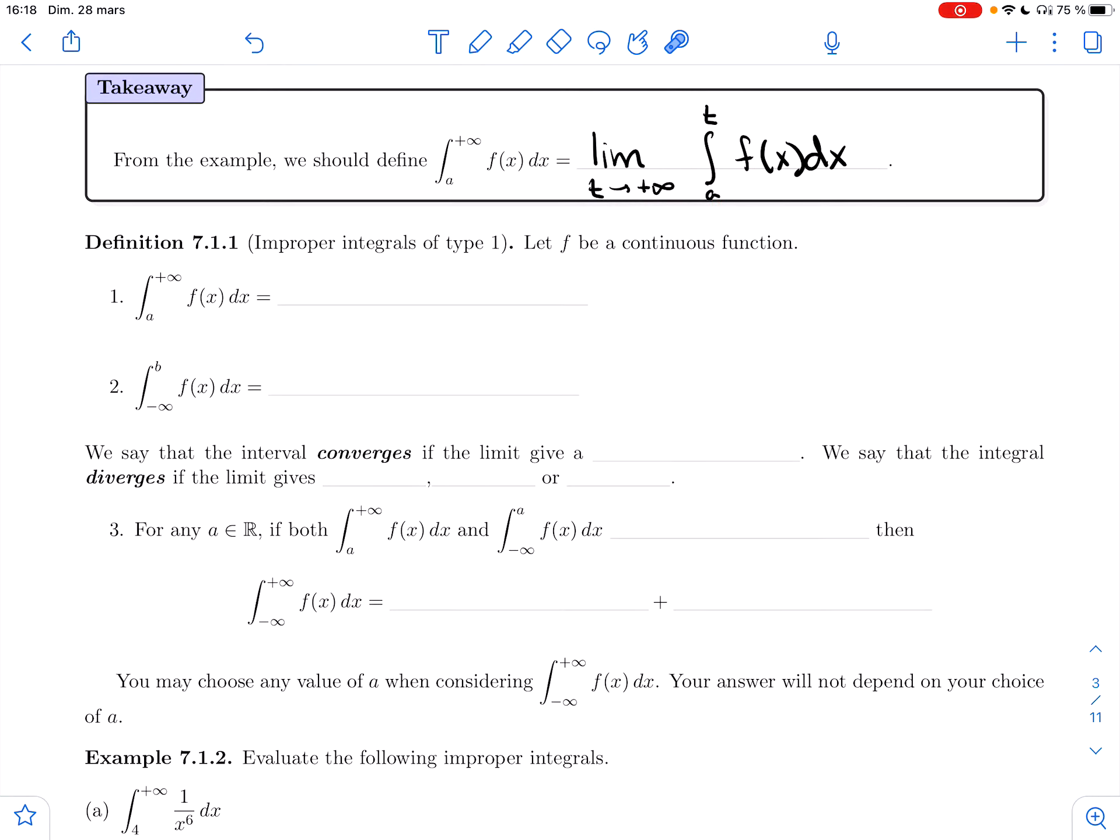So let's put that in a definition. Definition 7.1.1, improper integrals of type 1. Let f be a continuous function. The integral from a to infinity of f(x)dx should be the limit as t goes to positive infinity of the integral from a to t of f(x)dx.